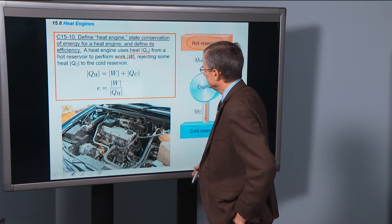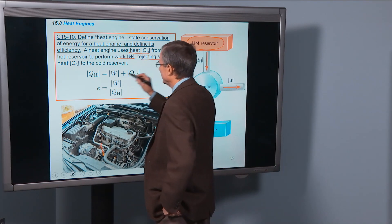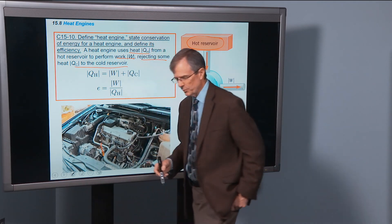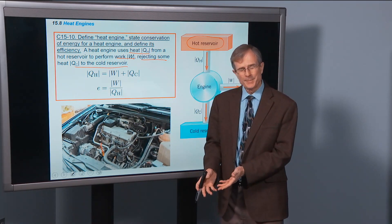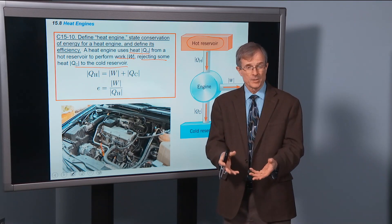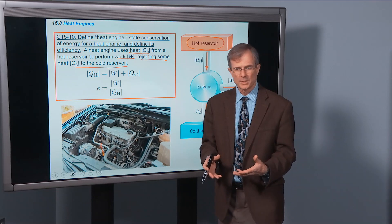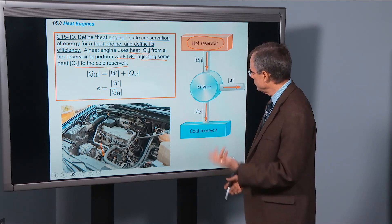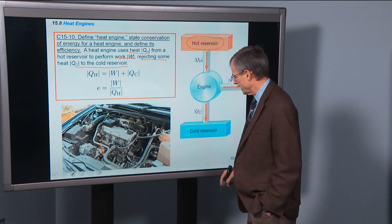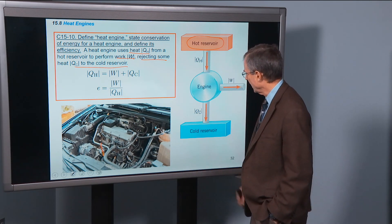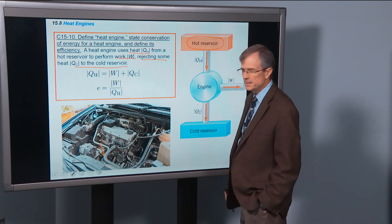Some of the heat created inside this engine is rejected to a cold reservoir — that's out the tailpipe. The air coming out of the tailpipe is not as hot as the air inside the cylinders during the internal combustion. But you do lose some heat into this cold reservoir, which is the outside world. That's the basic idea for a heat engine.